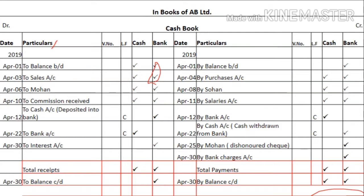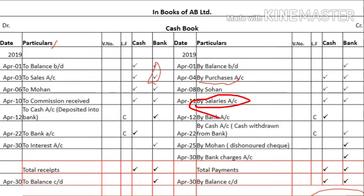On the credit side, items include 'By Purchases Account'. If payment is made in cash, write it in the cash column; if by cheque, write it in the bank column. Similarly for 'By Sohan' — if payment is in cash, use the cash column; if by cheque, use the bank column. The same rule applies for 'By Salaries'.